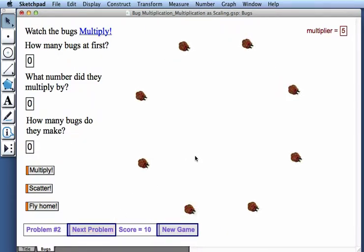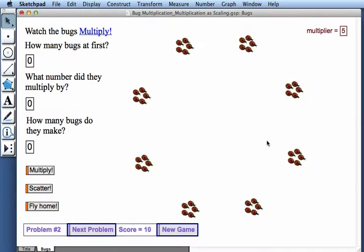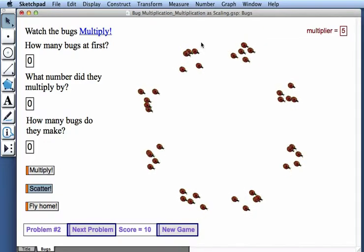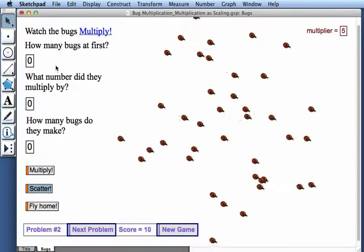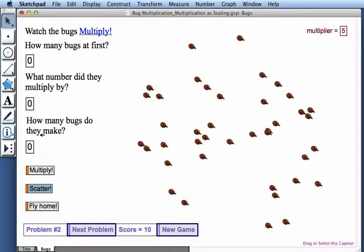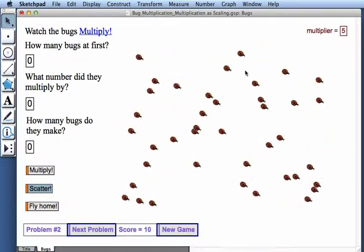And this time I have a different number of bugs to start. I have 8 bugs, and again, each of those bugs split into 5 bugs, and then they scattered around the screen. So I could enter these 3 numbers again and see if I got the answer correct.